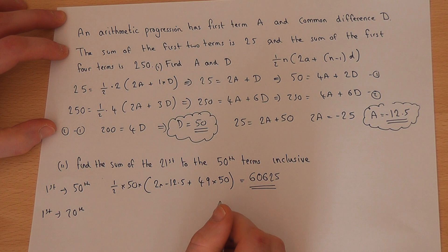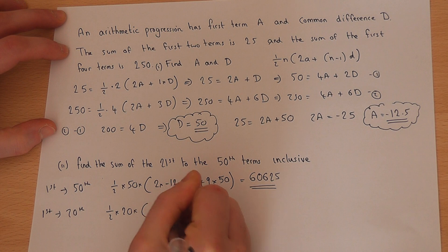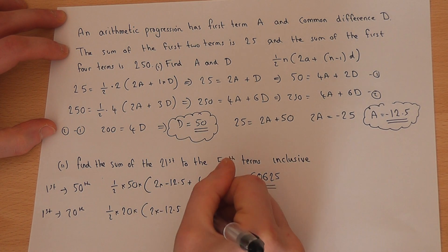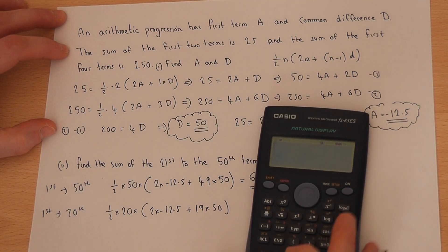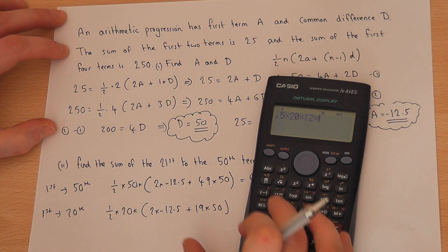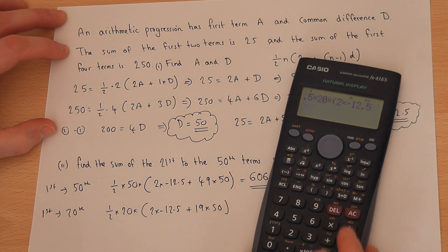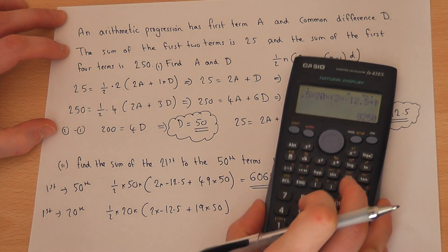So n is now 20. So a half of n times 2 times a. n is 20, so 19 times d is 50. I will now work out what this is. So a half of 20 times 2 lots of minus 12.5 plus 19 times 50. That works out at 9250.